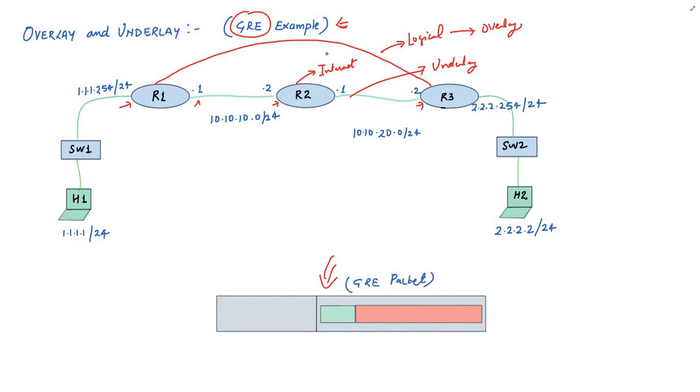Finally, let's understand how things actually work. Suppose for now, let's assume our GRE tunnel is working between R1 and R3. This is shown in red color.